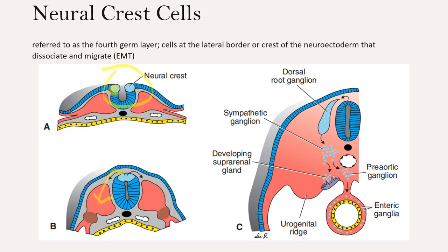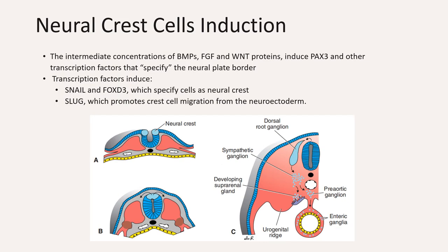The neural crest cells also form and migrate from the cranial neural folds, leaving the neural tube before it closes. These cells are very important because eventually they will contribute to the craniofacial skeleton. There are many other structures that the neural crest cells can develop into, and that is the reason why they are sometimes referred to as the fourth germ layer. The induction of neural crest cells involves the concentration of bone morphogenetic proteins, or BMPs, as well as other signaling molecules.